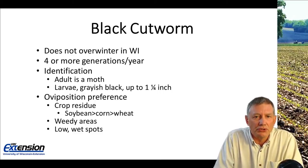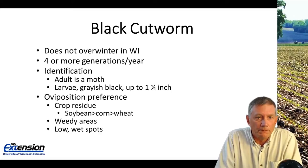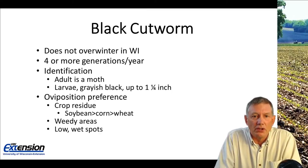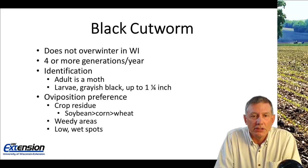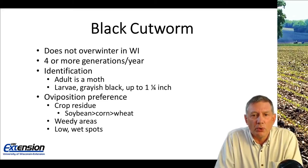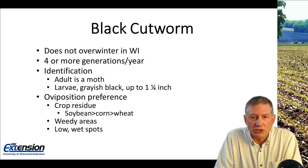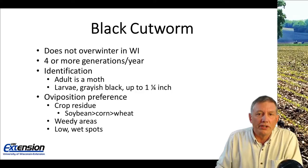The larvae are kind of a nondescript grayish color, up to maybe an inch, an inch and a quarter long. What is important is that the females have an oviposition preference — that is, they have preferences where they want to lay eggs. They do like crop residue, and of the different types, they really prefer soybean residue over that of corn, and corn over that of wheat. I would suggest that you pay more attention to corn that's planted after soybeans.